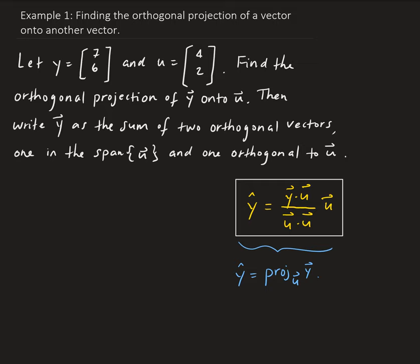First, let's find the components. We're going to find y dotted with u. So y dot u: we have [7, 6] dotted with [4, 2]. This gives us 28 plus 12, which gives us 40. To dot two vectors, you multiply the components — multiply the values in the vector component-wise and then add them all.